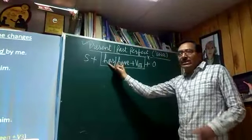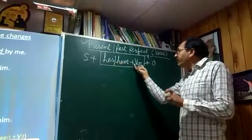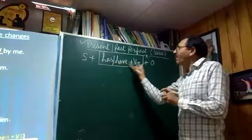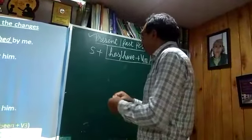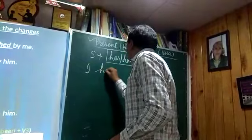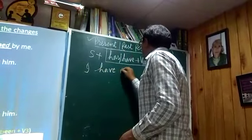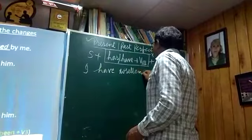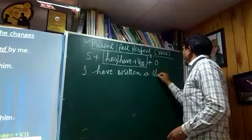Has and have are the present form of the auxiliary verb. Since has/have is present and the verb is in perfect form, this is called present perfect tense. Let's take an example: I have written a story book.